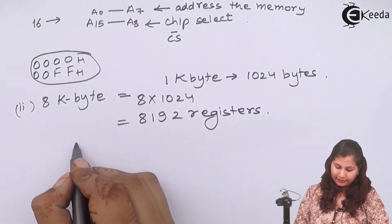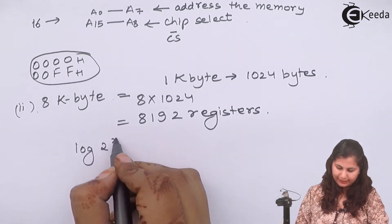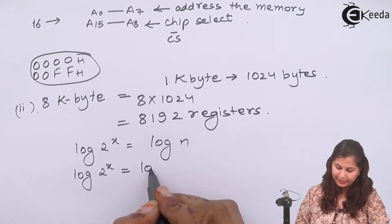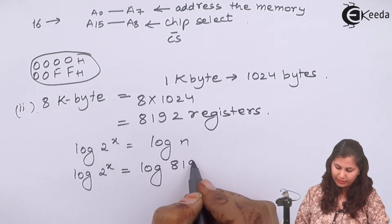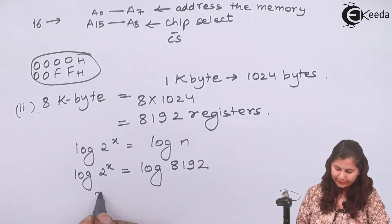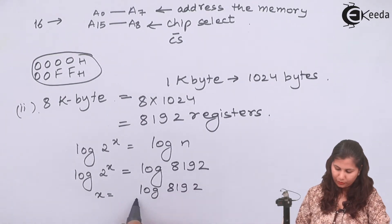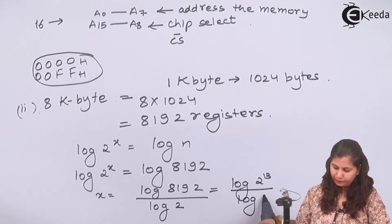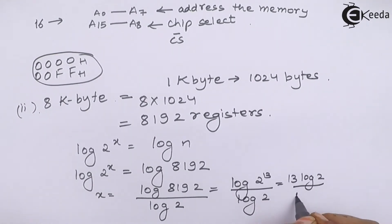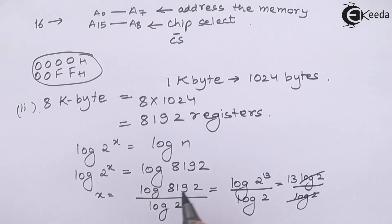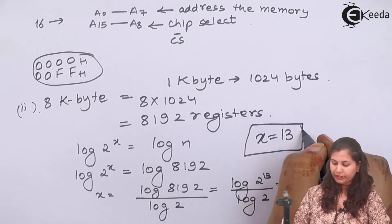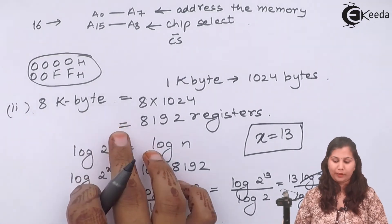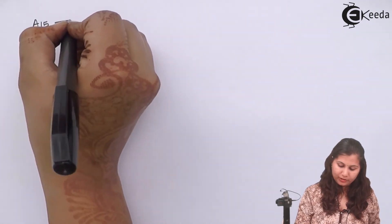Using the same formula, log(2^x) = log(n), where x is the number of address lines and n is the number of registers. For 8KB, n = 8192. So x = log(8192) / log(2) = log(2^13) / log(2) = 13·log(2) / log(2), which cancels to give x = 13. Therefore, 13 address lines are used to address this 8 kilobyte memory chip.